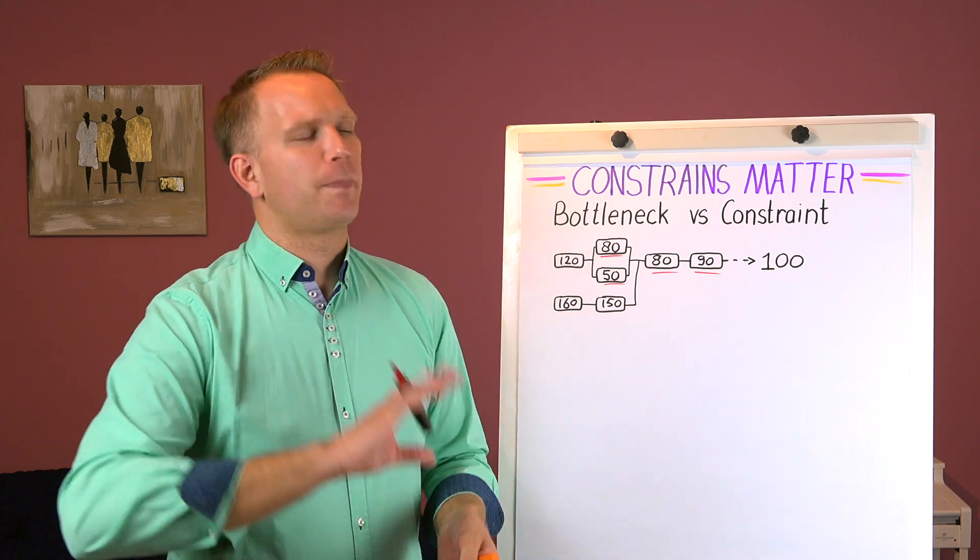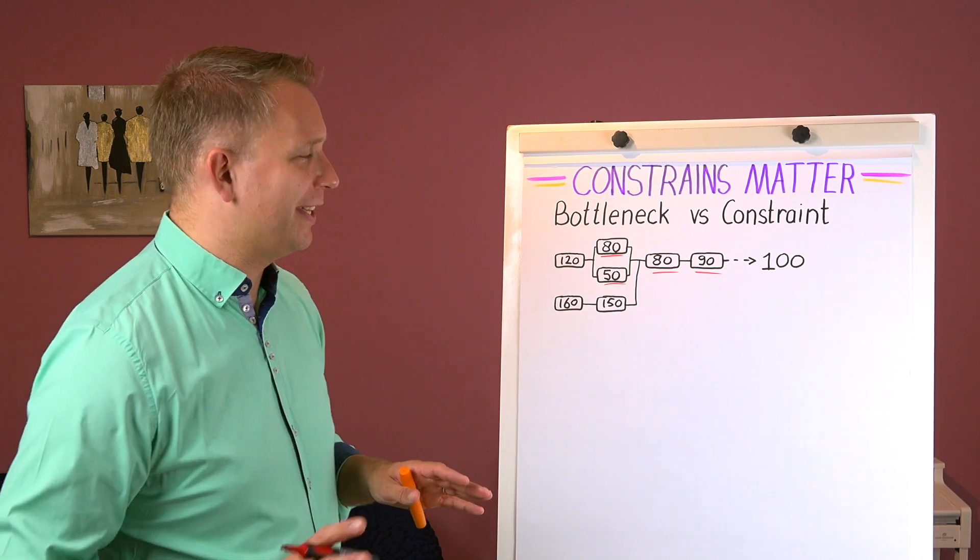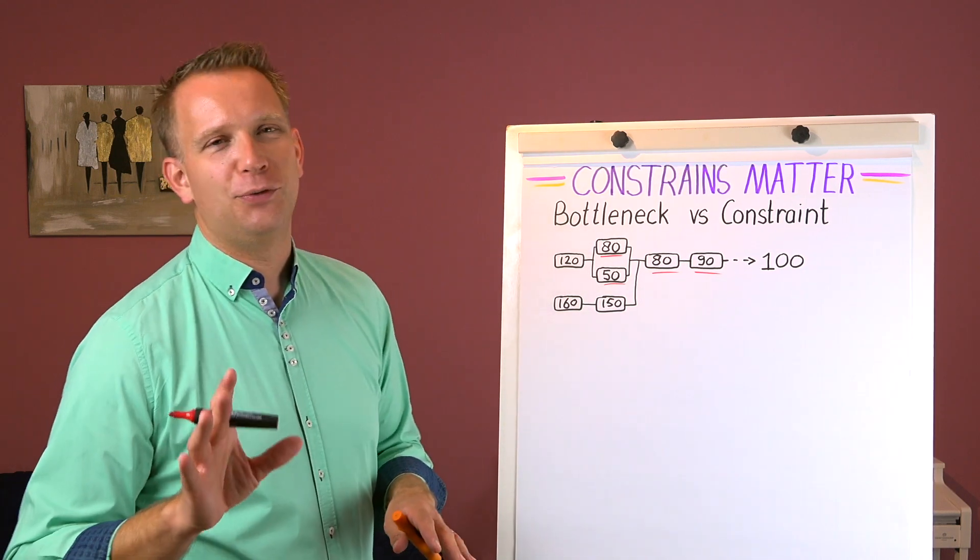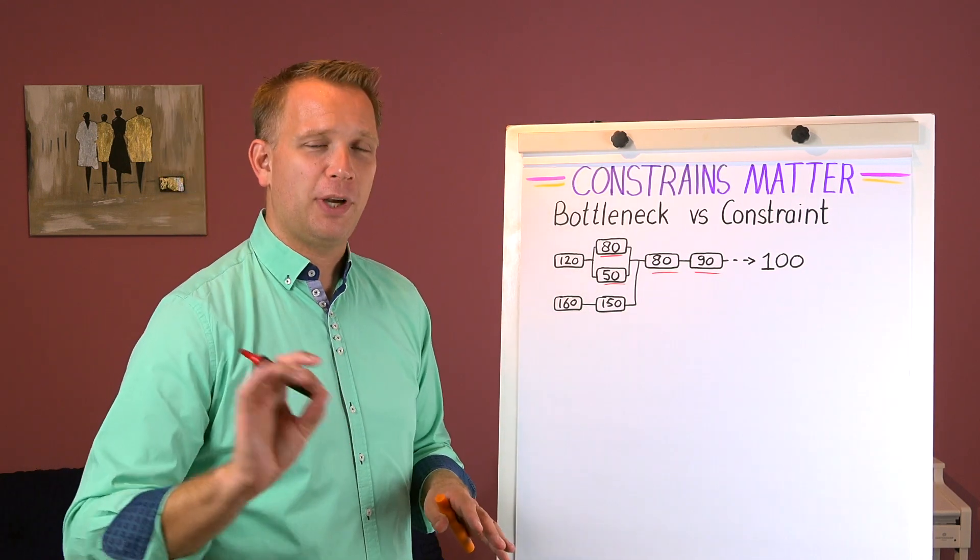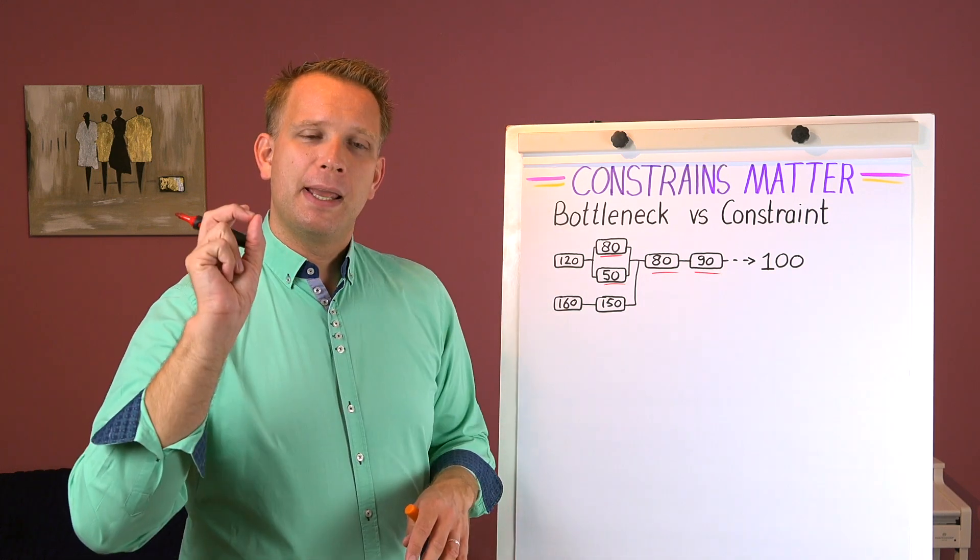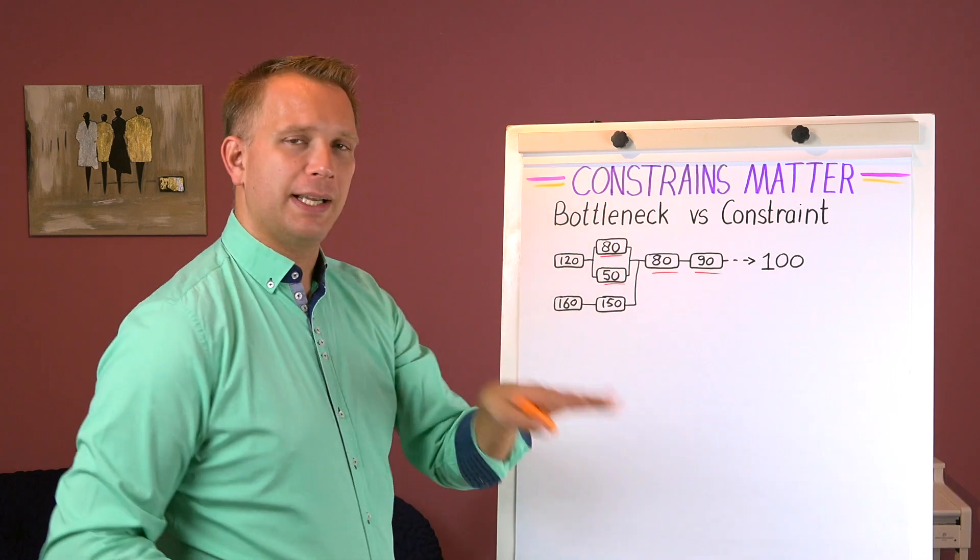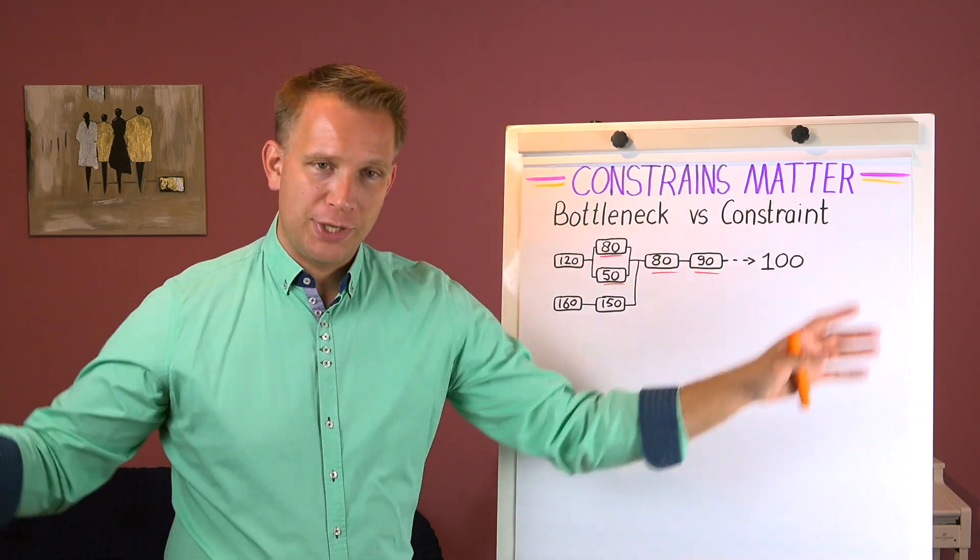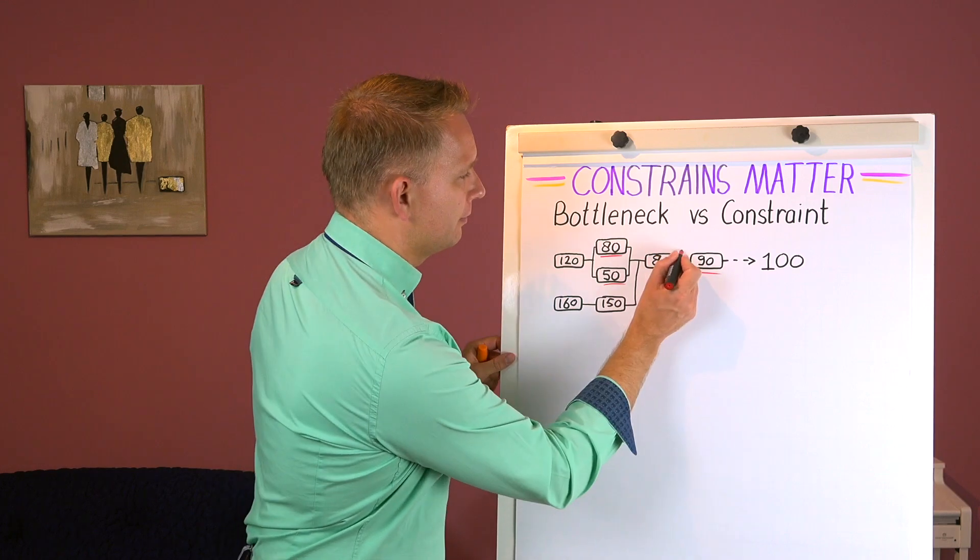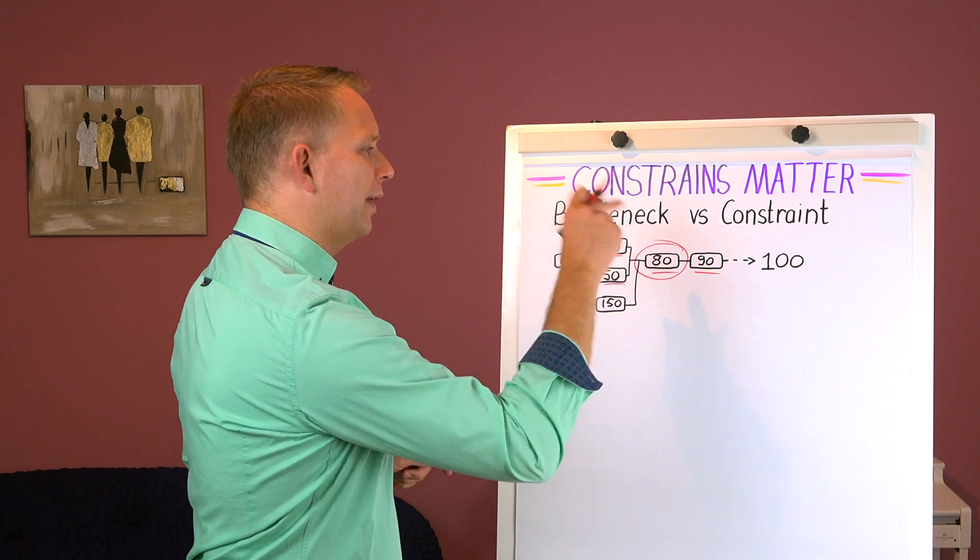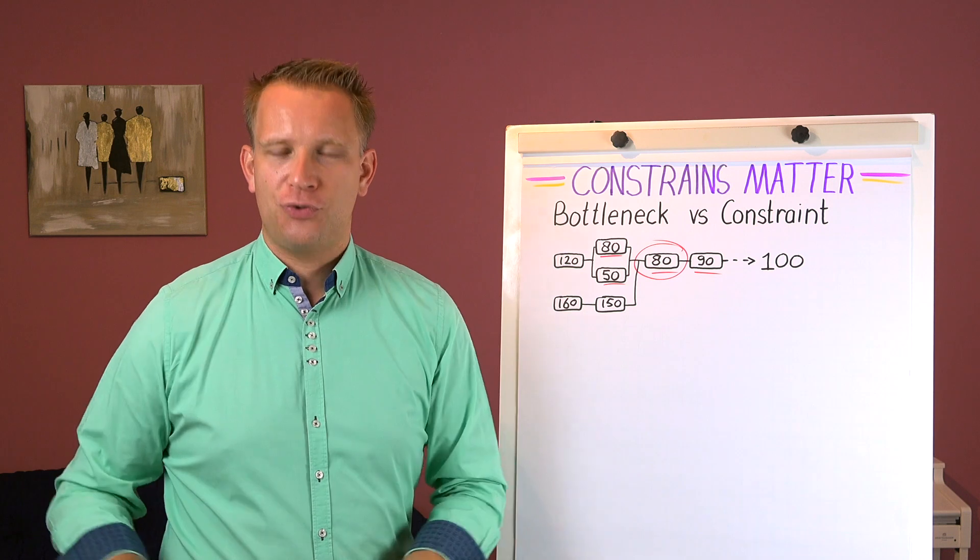There can be only one constraint at any one time. There's a whole thing about the jumping bottlenecks in the books. You really need to read The Goal, it's a brilliant book. After that you'll probably want to read the other ones as well. But the main message: there's only one constraint and the constraint is the one that slows down the whole process. So that one, the slowest one out there, that is the constraint.